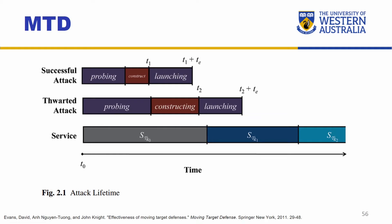If the attack duration needs longer — for example, it took longer to probe and longer to construct and launch the attack — then we can foil this particular attack because now we have moved on to a different type of service. This can be a diversity-based defense technique. As you can see, if we can shorten this period of time and make changes more frequently, we can thwart attacks more successfully by making the time frame very short for attackers. Of course, there is a trade-off: if we are changing the service very frequently, there's going to be some overhead associated with it, affecting how the service performs.